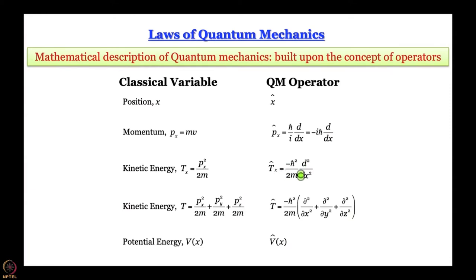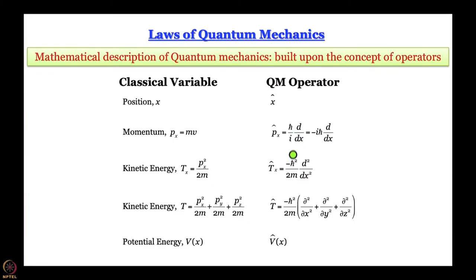Kinetic energy for motion along x is given by pₓ²/2m in classical mechanics. If the operator of kinetic energy is −ħ²/2m · d²/dx², it must have come from operating the pₓ operator twice and dividing by 2m. With that understanding, the momentum operator for motion along one direction is ħ/i · d/dx, or equivalently −ħ · d/dx. If we make it operate twice, we get d²/dx² and ħ × ħ = ħ², and i × i = −1, giving us −ħ²/2m · d²/dx². This shows the compatibility between the kinetic energy operator and the momentum operator.